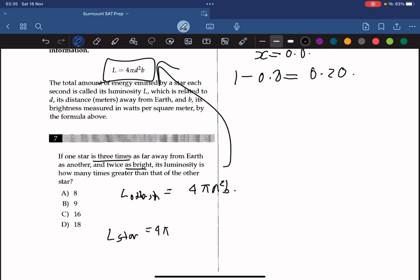And we can rewrite this as 3 squared times 2 times 4 pi D squared times B, which is equal to 18. So it's 18, and then we can rewrite this as L of the other star. So the answer must be 18 times.